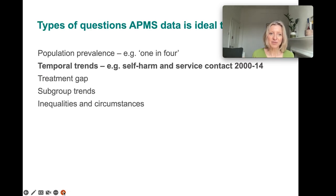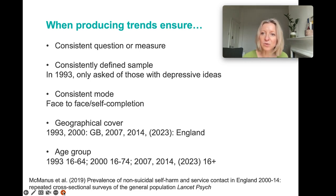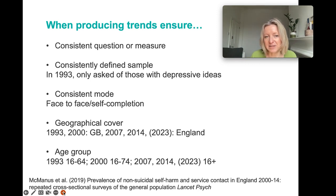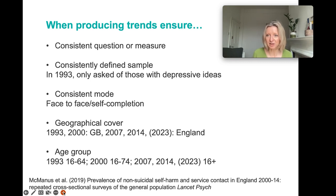You can also use the repeated cross-sectional survey series to look at temporal trends — change over time. In this particular paper, we used data from a number of surveys to look at trends over time in self-harming behaviours. This is a useful example for discussing what you need to consider in your planning and analysis of this type of data.